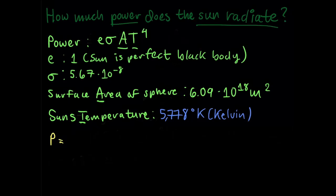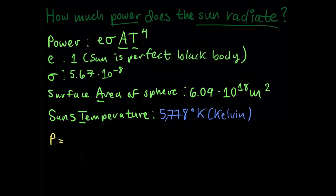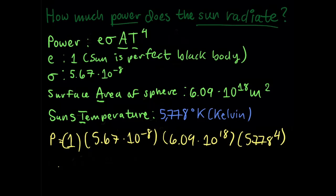Now that we have found the surface area of the sun, we move on to the power, which is εσAT^4. Where ε is 1, since the sun is a perfect black body. σ is 5.67 × 10^-8. A is 6.09 × 10^18. And T is 5,778^4, which gives you 3.85 × 10^26 watts.